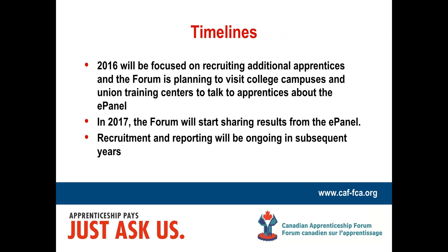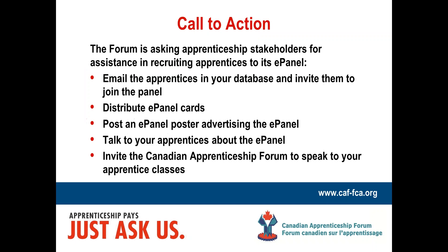In terms of timelines, 2016 will really be focused on recruiting additional apprentices into the ePanel. As part of our recruiting strategy, the Canadian Apprenticeship Forum is planning to visit college campuses and union trade centers to talk directly to apprentices about joining the ePanel. We will also be working in close collaboration with our members and other apprenticeship stakeholders to encourage more apprentices to join. In 2017, we hope the Canadian Apprenticeship Forum will be in a position to start sharing results from the ePanel with apprenticeship stakeholders, and recruitment and reporting will be ongoing in subsequent years. We're really envisioning this as a long-term initiative and a consistent way to gather feedback from apprentices.